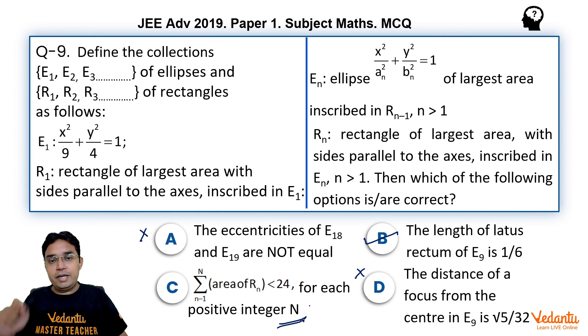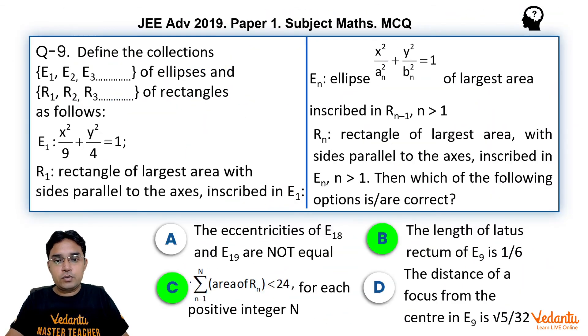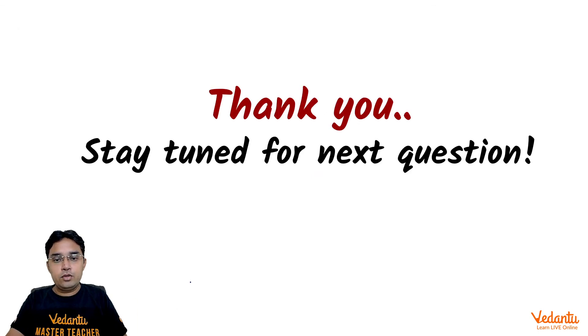So whatever small it is, but it will be smaller than 24. So this C option is also correct. So the answer for this question is B and C. I hope you like this solution. Thank you so much. Stay tuned for the next question. Bye.